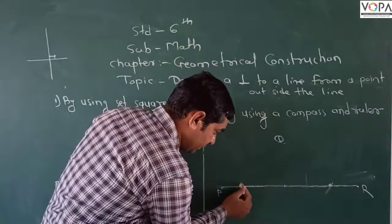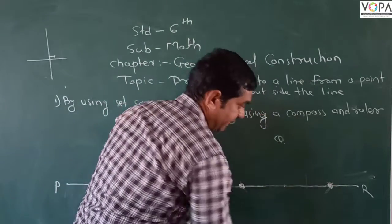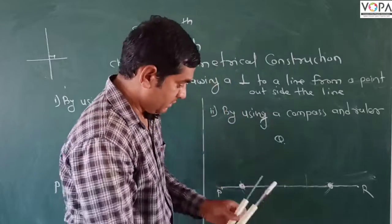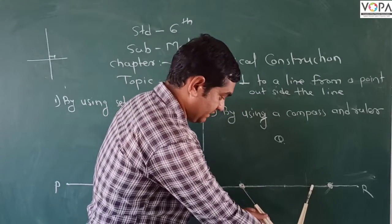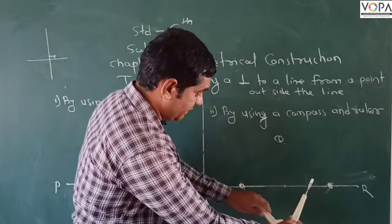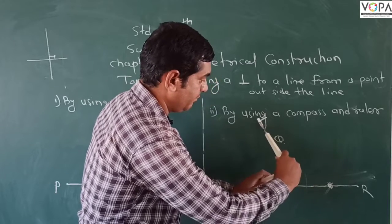From these two points, the first and second, take more than half the distance. And with this distance, make an arc here.